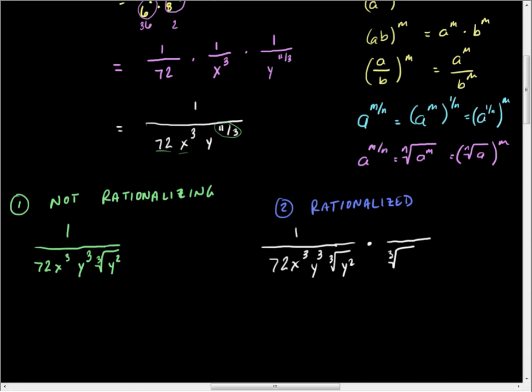Okay, now, the three here says that we have to look for y's in groups of three. Well, we already have two y's. We need three. We want one more. And so, that's what we're going to want to multiply top and bottom by. When we do that, what we get is the cube root of y divided by 72x cubed, y cubed. But then we have the cube root of y cubed. Now, that's just y.